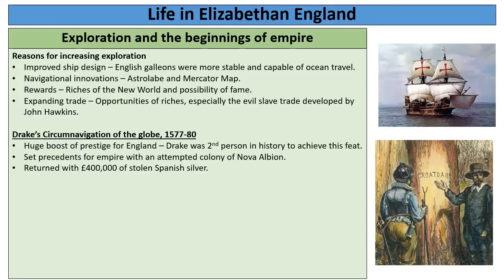Drake also set up a colony in what is today around San Francisco, which he called Nova Albion. Even though it didn't last very long, it set a precedent for future empire. It also brought huge wealth for Drake and the English throne — he stole, as mentioned before, £400,000, millions of pounds today, of Spanish silver.